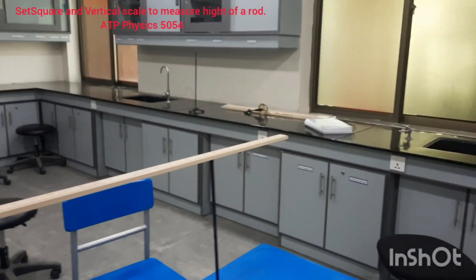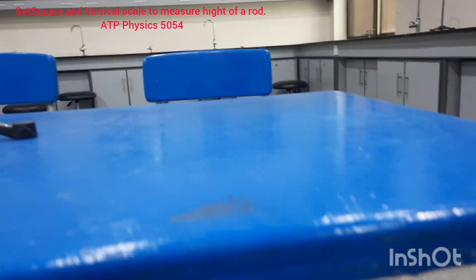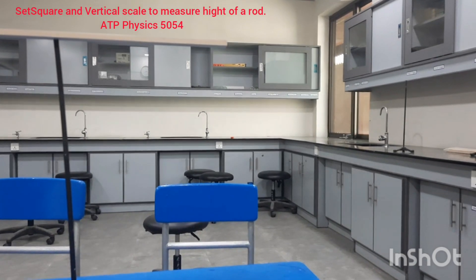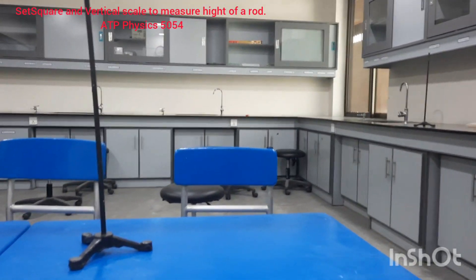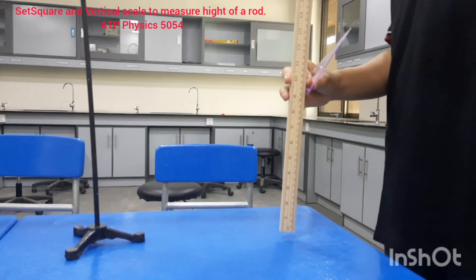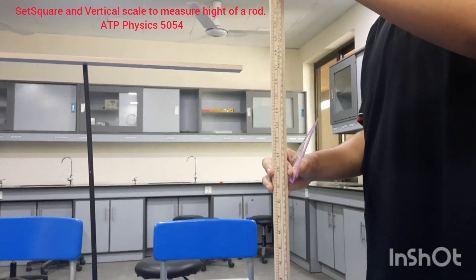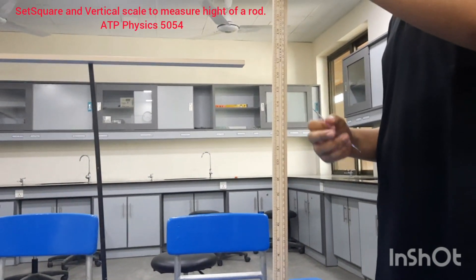But for that purpose, when you're trying to find out the height of this rod from the bench, we will use another rod. We will place a rod at a little distance from the rod whose level we want to check.